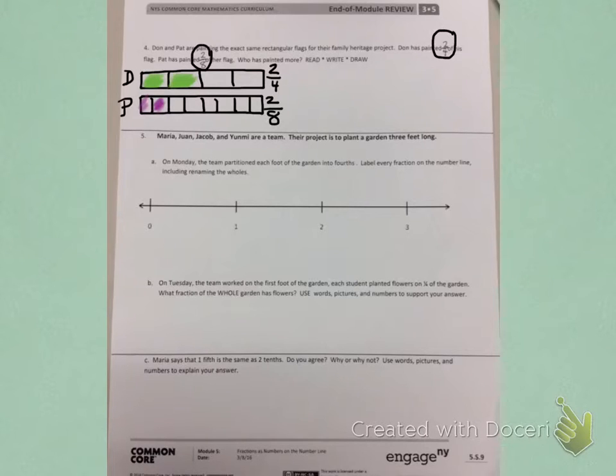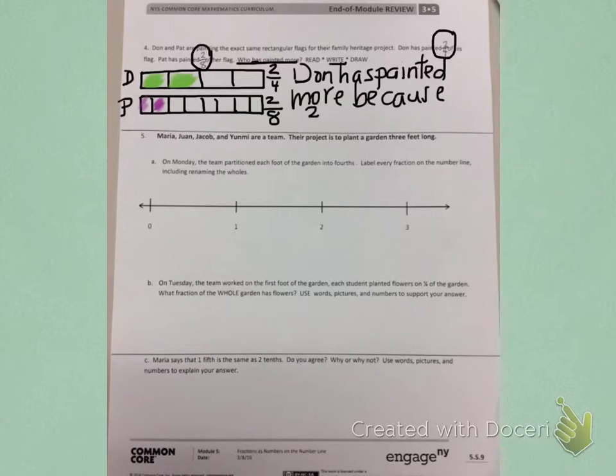When I look at those two pictures, I can see who has painted more. Don has painted more because more of the rectangle is shaded in. Also, fourths are larger than eighths, so I need to write, Don has painted more because two-fourths is greater than two-eighths.